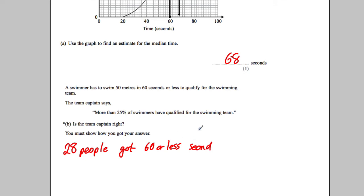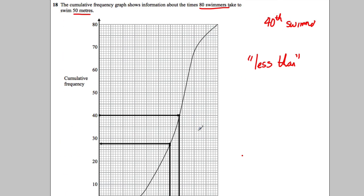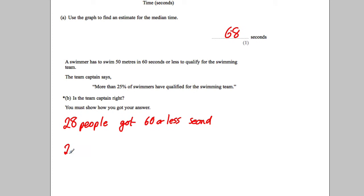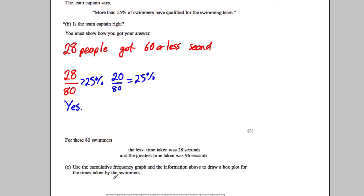Now, the question is, is it more than 25%? Is 28 out of 80? Okay, 28 out of 80. Now, 25% would be 20 out of 80. That would be equal to 25%. So this looks like, yes, it is certainly more than that. So 28 out of 80 is definitely more than 25%. So is he right? The team captain, yes, he's right. It is more than 25%.